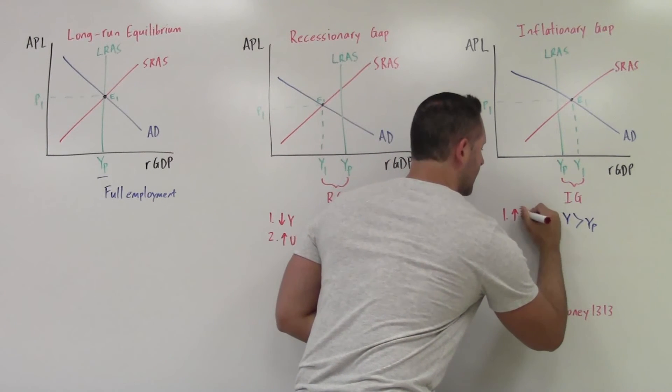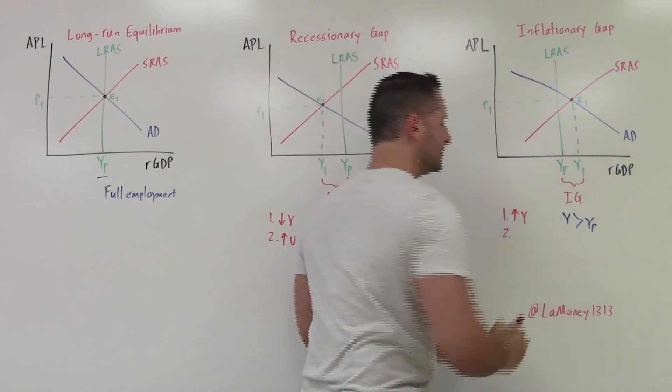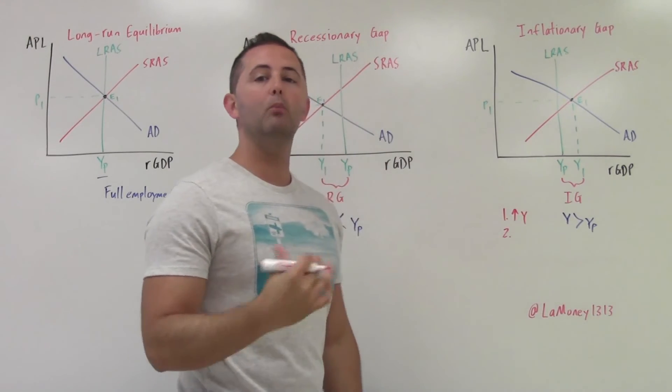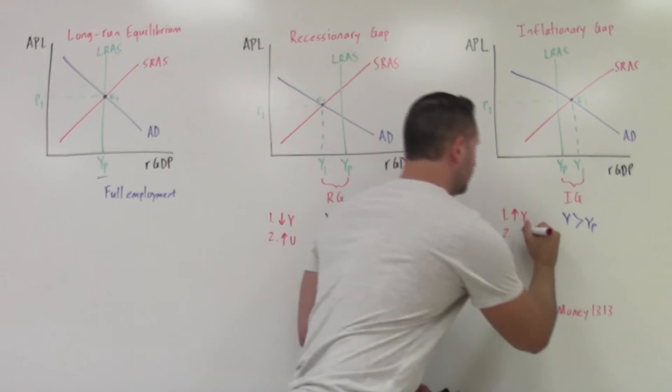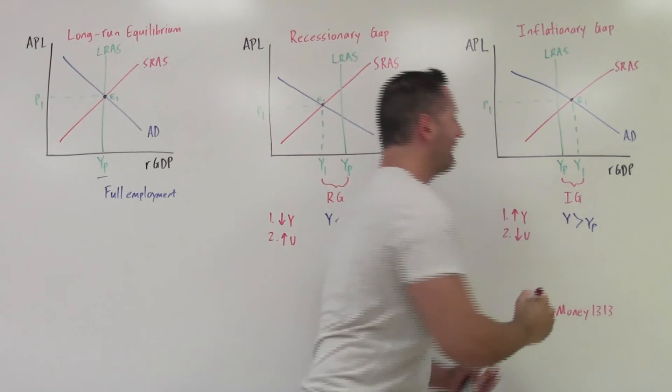So number one, output is high. As a result of that, when output is high, we need more workers. So unemployment is going to fall. So we are going to have low unemployment.